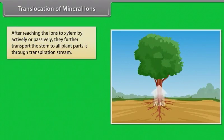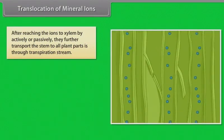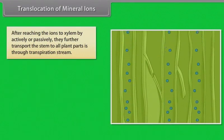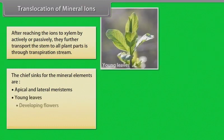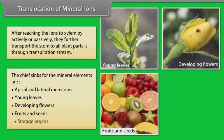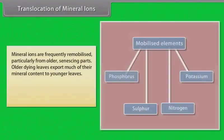After the ions have reached the xylem through active or passive uptake, or a combination of the two, their further transport up the stem to all parts of the plant is through the transpiration stream. The chief sinks for the mineral elements are the growing regions of the plant, such as the apical and lateral meristems, young leaves, developing flowers, fruits and seeds, and the storage organs. Mineral ions are frequently remobilized, particularly from older, senescing parts.